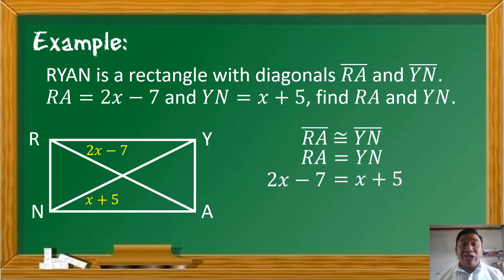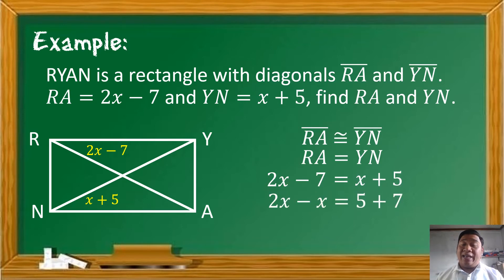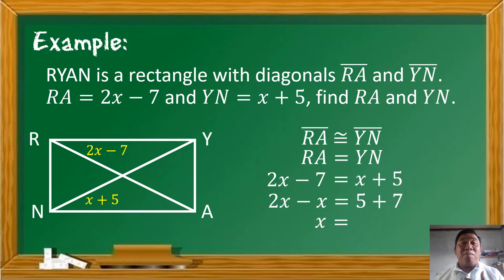Meron na tayong resulting linear equation: 2x minus 7 is equal to x plus 5. Ang kailangan nating gawin is to combine like terms — kailangan nating mag-transpose. Si negative 7 na nasa left side, kailangan nating ilipat papuntang right side, at magiging positive 7. Doon naman sa right side, ilipat natin si x papuntang left side, kaya magiging negative x. The resulting equation would be 2x minus x is equal to 5 plus 7. So, x is equal to 12.